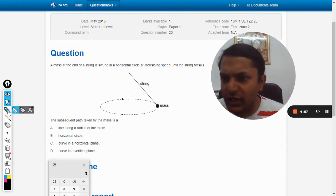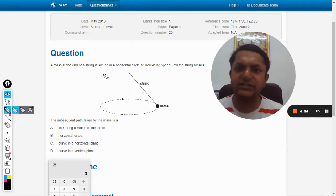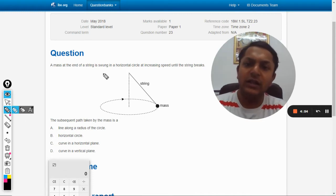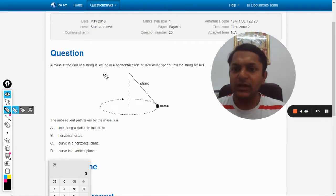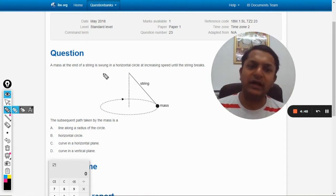Okay, so in this question a mass at the end of a string is swung in a horizontal circle at increasing speed until the string breaks. The subsequent path taken by the mass is... so what is the path that will be followed?